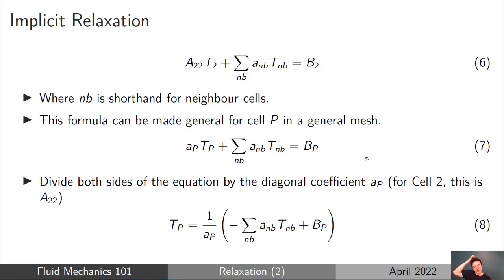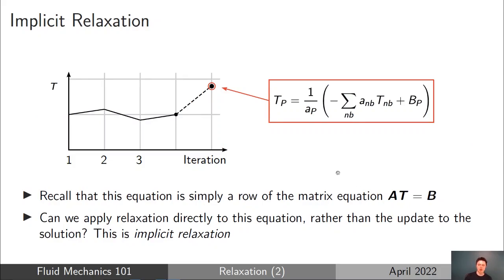To derive the implicit relaxation formula, we divide both sides of the equation by AP — where for cell 2, AP represents A22, the diagonal coefficient. This gives us equation 8. What we've actually done is isolated the single equation that gives us the calculated temperature, T calc, that we would apply if we weren't using any relaxation.